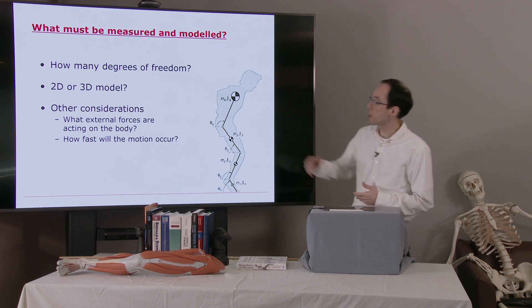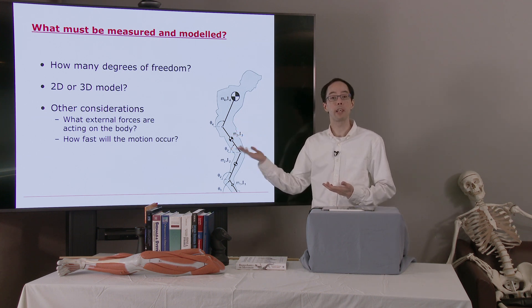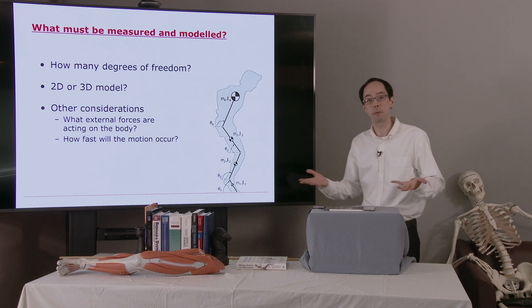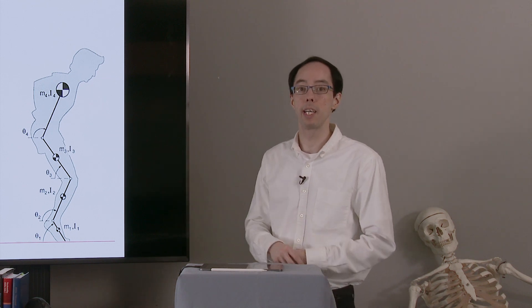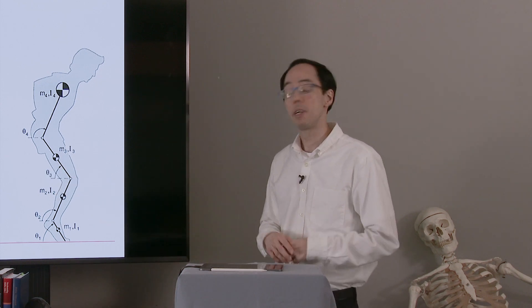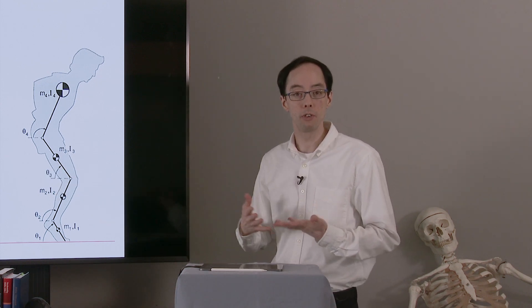Other considerations, for example, what are the external forces acting on the body? Is the person carrying something? If they're carrying something, they would either need arms, or maybe at least a point on the model where we can apply that external force. The speed of the motion can affect a lot of things, for example, maybe the cut-off frequency you'll use in a filter.